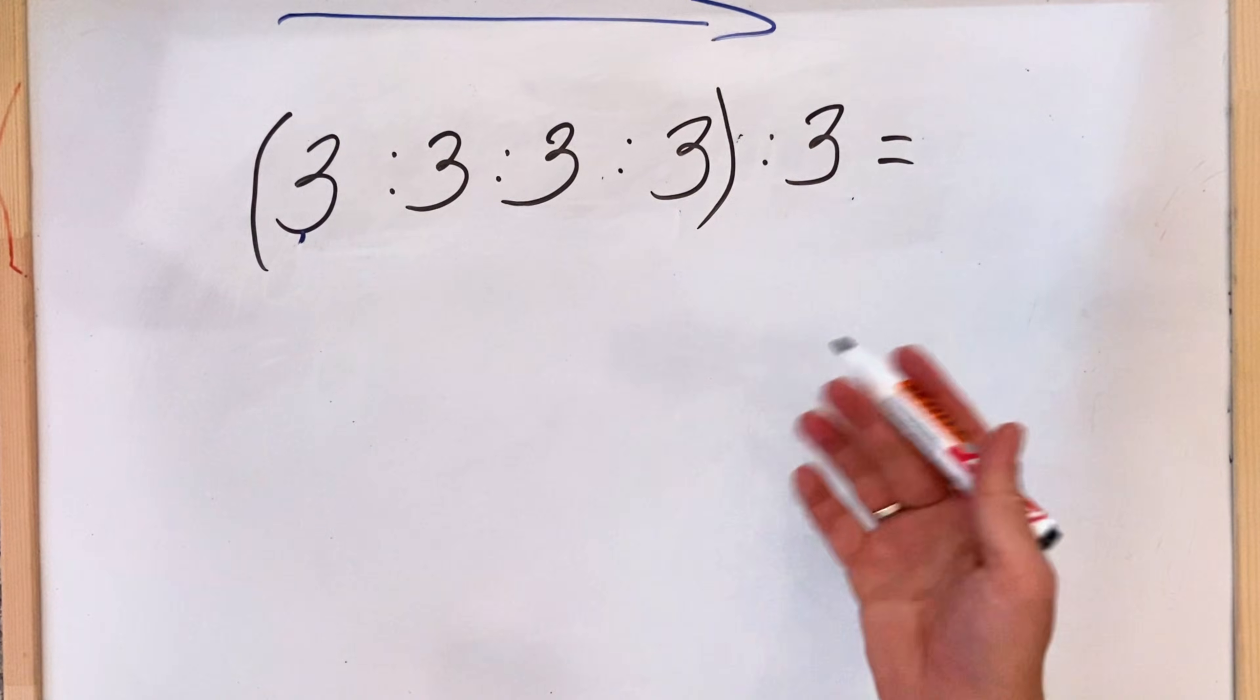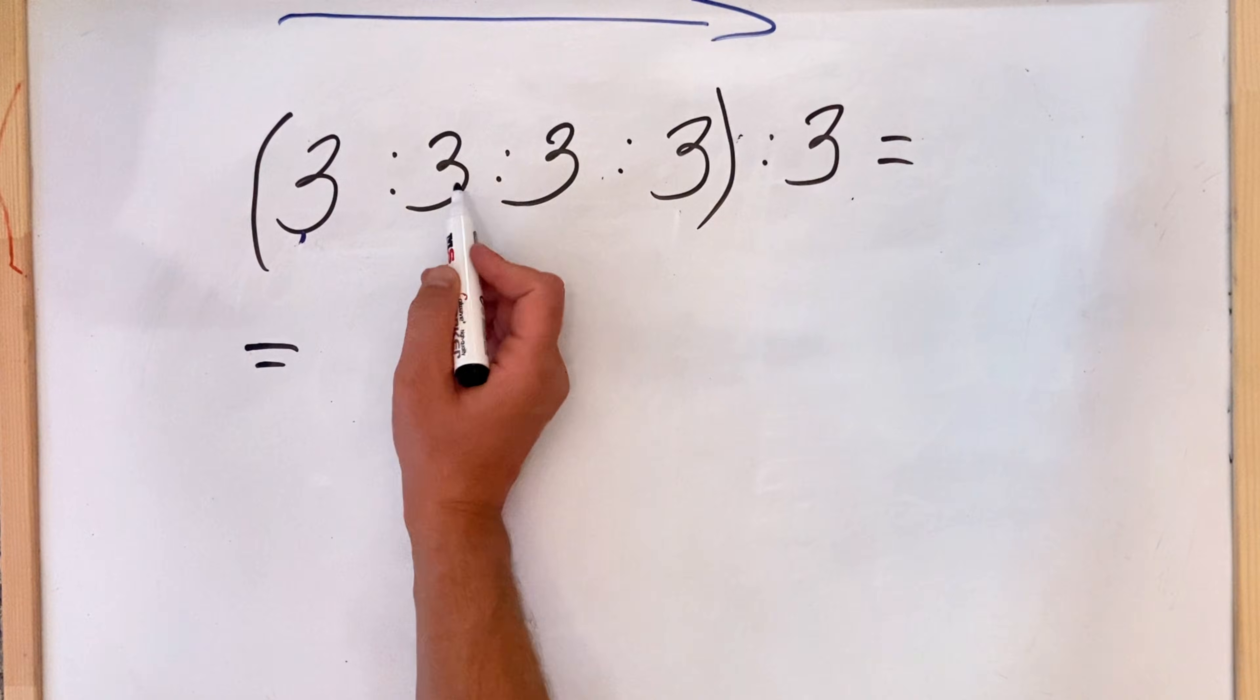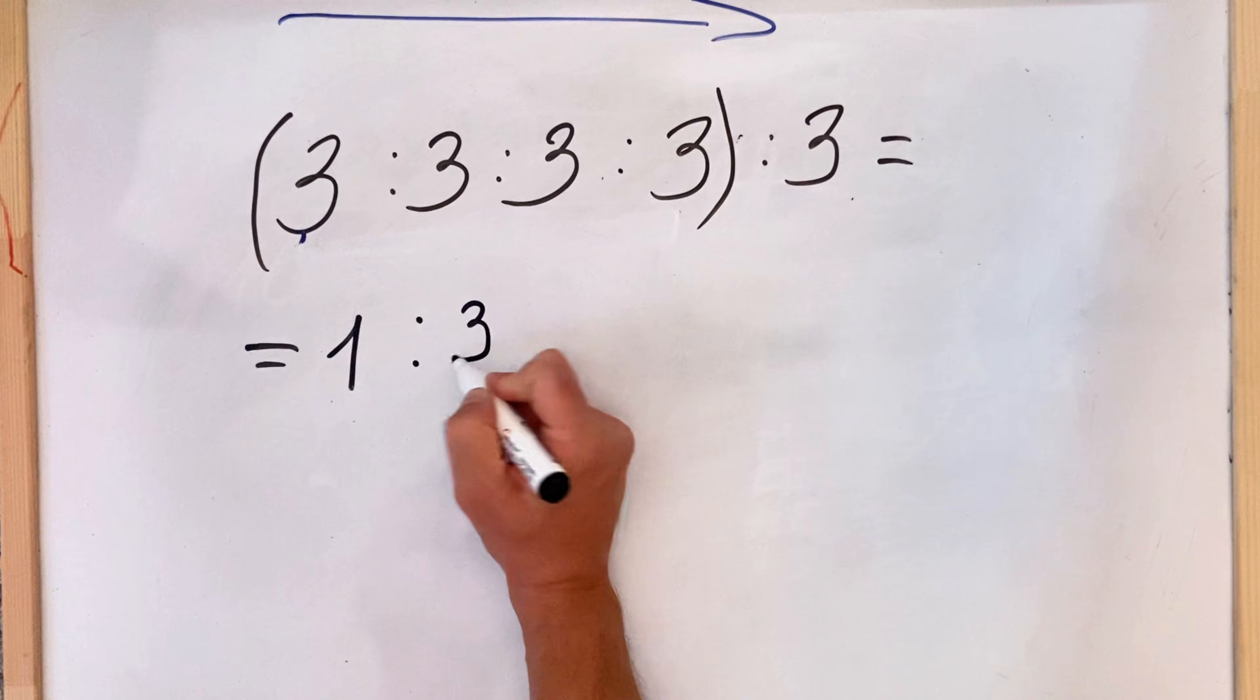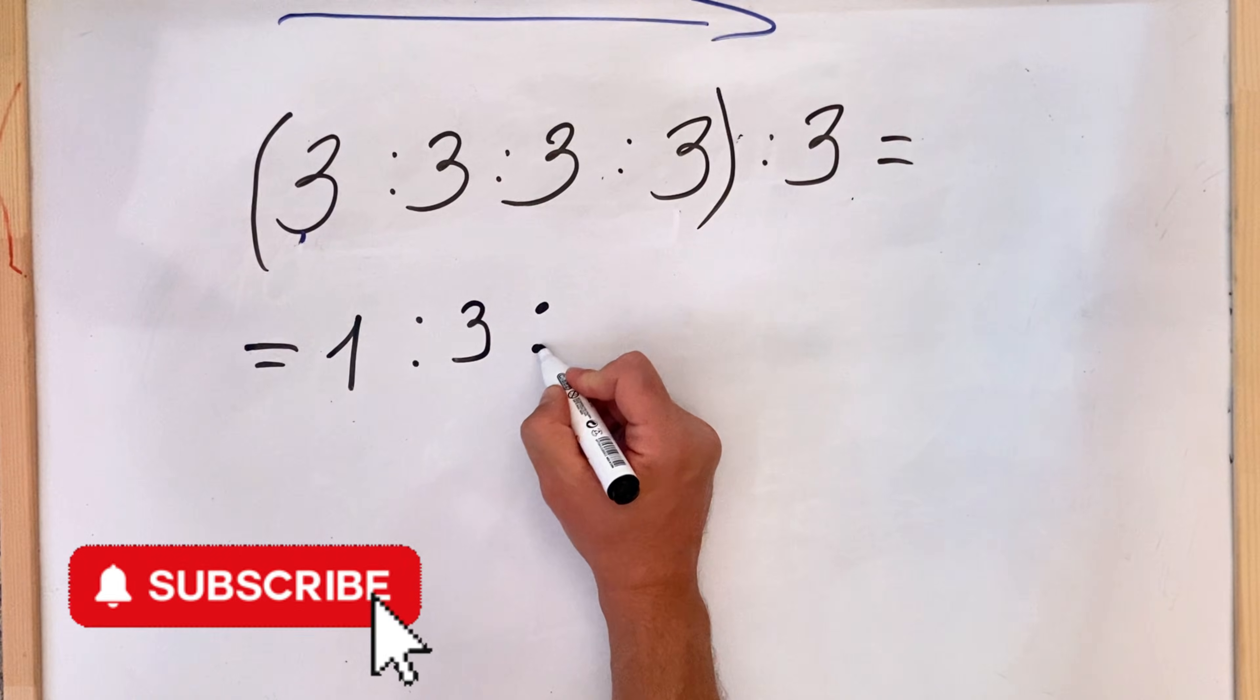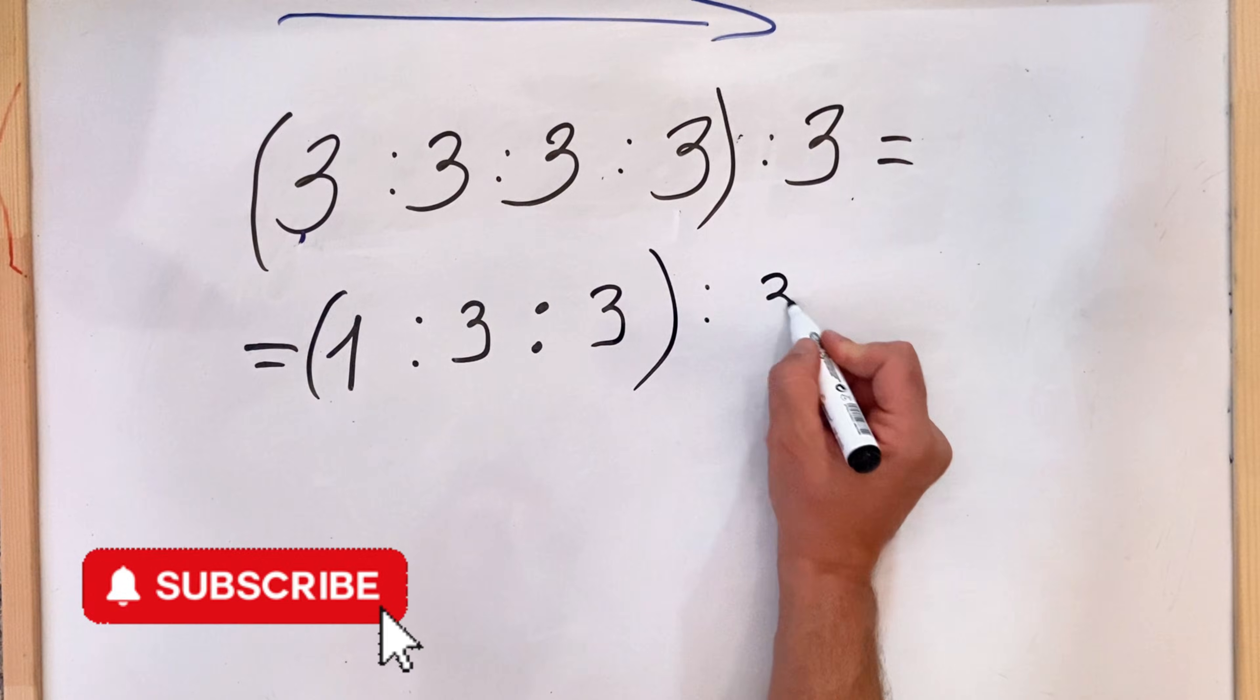So in our case, the correct solution of this equation would be: we have 3 divided by 3, which is 1. We have then we write what's left: 1 divided by 3, divided by 3, and all this divided by 3.